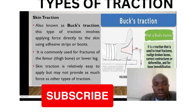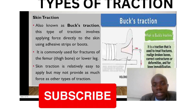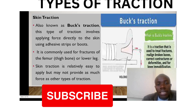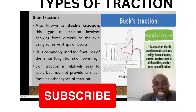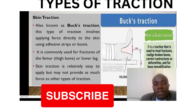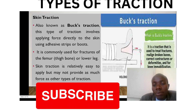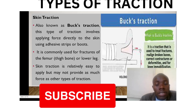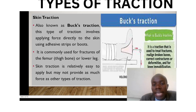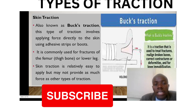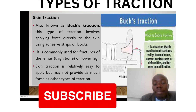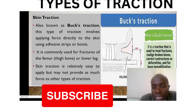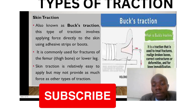The first type is skin traction, also called back traction. This type of traction involves applying a force directly to the skin using adhesive strips or boots — that's why it's called skin traction. It is commonly used in fractures of the femur or the lower leg. It is relatively easy to apply, but has a disadvantage in that it is not able to provide as much force as the other types of traction.